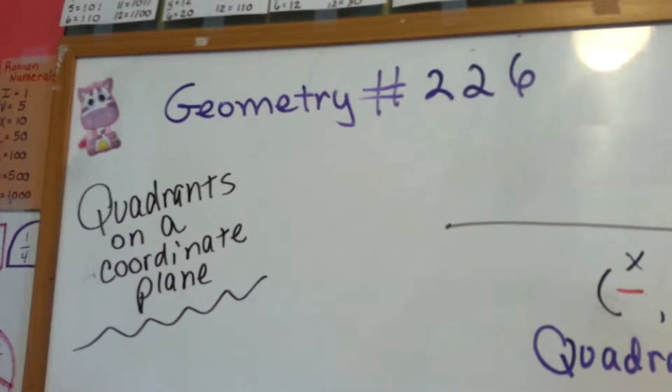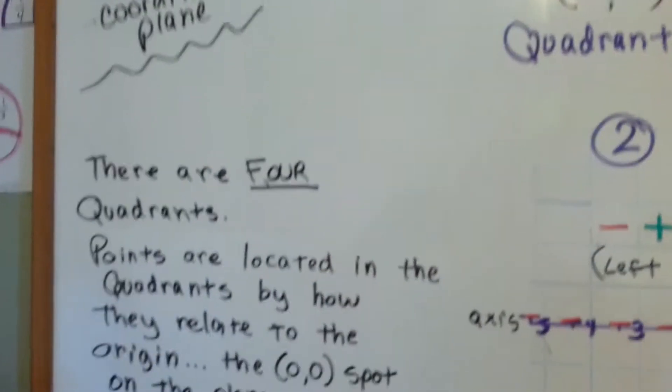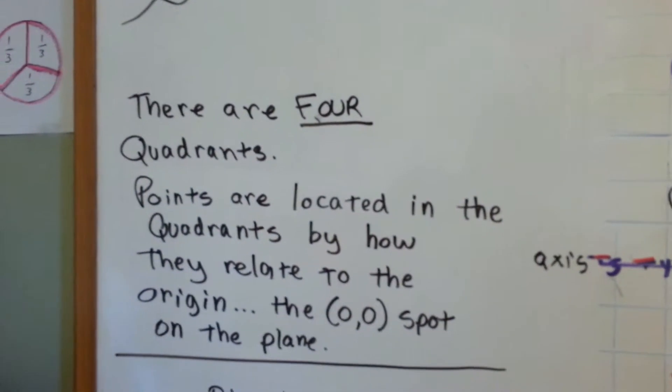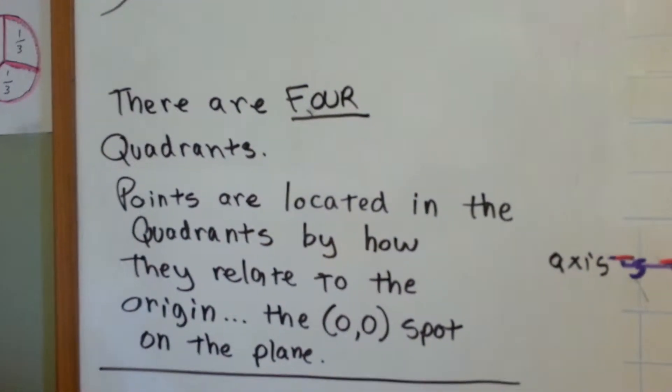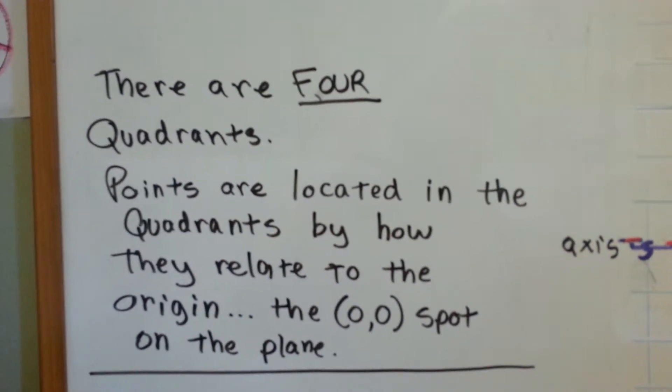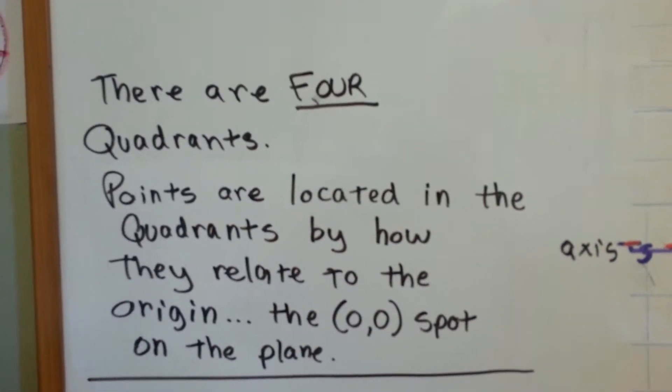Geometry 226, Quadrants on a Coordinate Plane. There are four quadrants on a coordinate plane. The points are located in the quadrants by how they relate to the origin, the zero-zero spot on the plane.